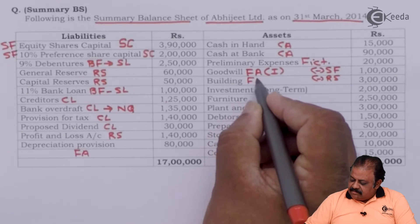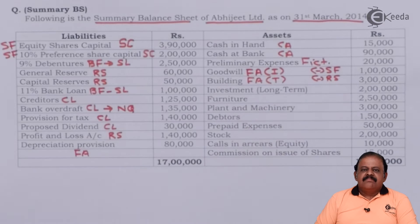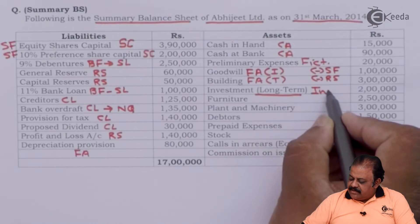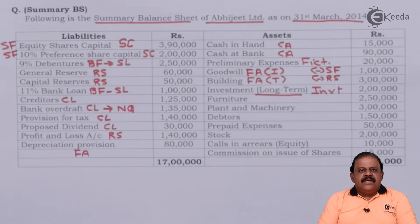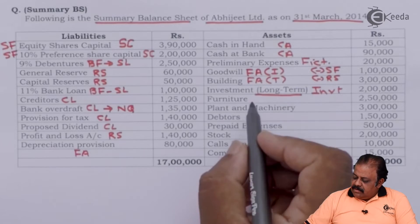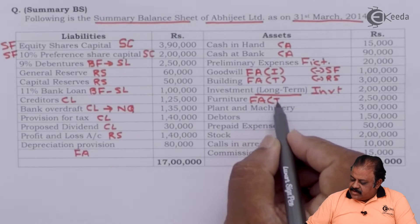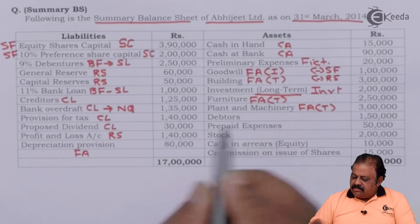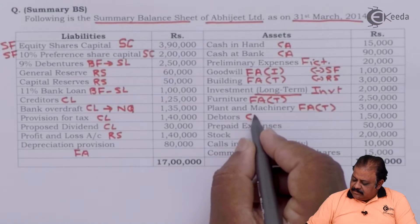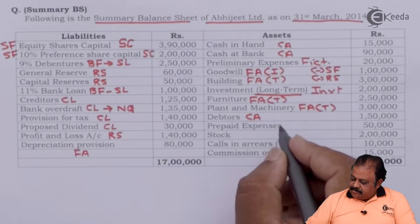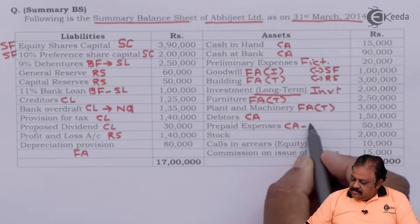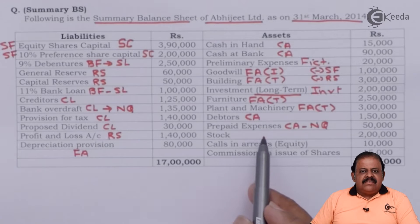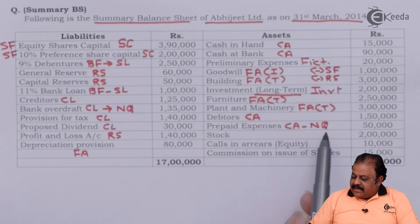Goodwill is a fixed asset — it is an intangible asset. Building is a tangible fixed asset. Investments are given as long term, so they will be shown under the separate heading of investments. If investments are short term, they will be part of current assets. Furniture and plant and machinery are tangible fixed assets. Debtors are a current asset. Prepaid expenses is a current asset but it is non-quick, meaning you cannot get back prepaid expenses easily.